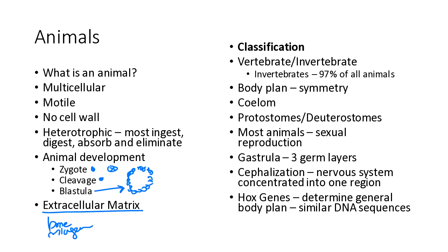Some features we use to classify animals: first, animals can be vertebrates or invertebrates — do they have a spinal column or not? Today our focus is on invertebrates, organisms that do not have a spinal column. Invertebrates make up about 97 percent of all animals. When you think of an animal you might think of a bear, cheetah, or dog — all vertebrates — but the majority of animal species are actually invertebrates. We'll also look at body symmetry as one way animals are classified into different groups.